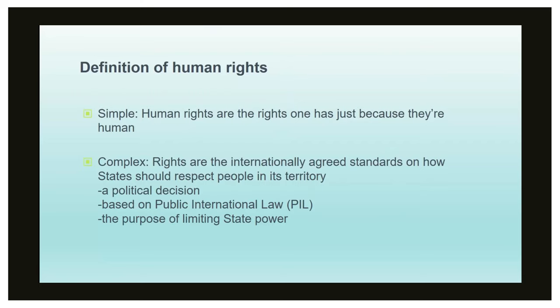The simple definition is: human rights are the rights that one has because they're human. The more complex definition is: rights are an internationally agreed standard on how states should respect people in their territory. That second definition shows the context of states, standards or treaties, and territorial application. You can go into more detail about universal jurisdiction, but that's a bit too early in the class. By talking about 'people in its territory,' you're avoiding talking about citizens — it's simply that people under the power of that government should get these rights, no matter what.